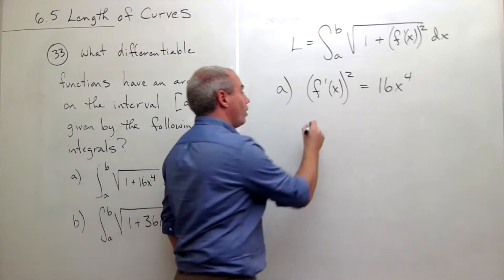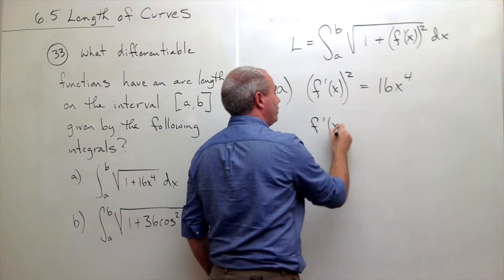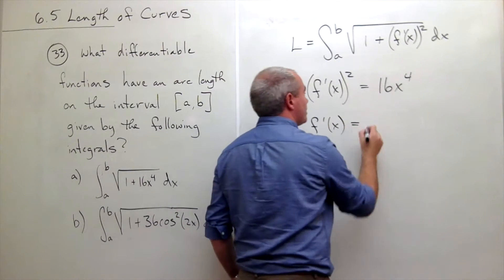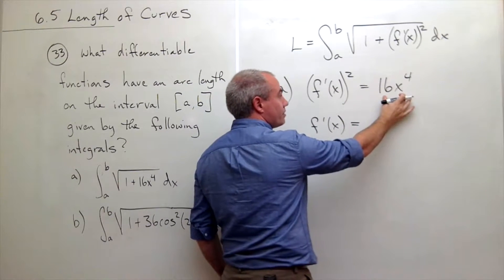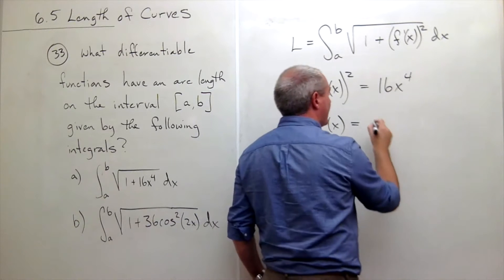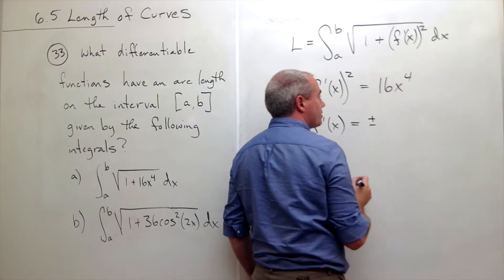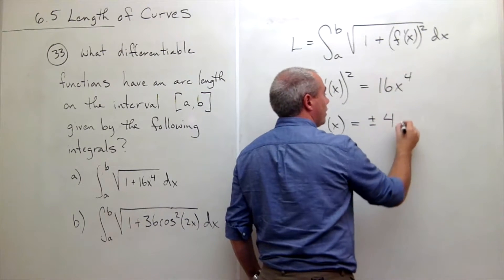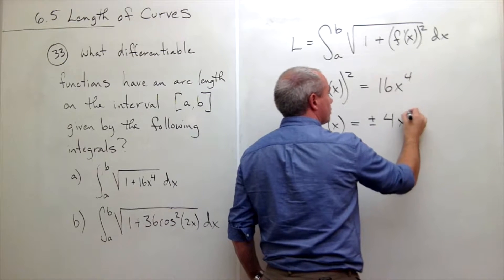In other words, if I want the derivative of my function, then that must be the square root of this, but the square root of that guy is actually plus or minus 4x squared.